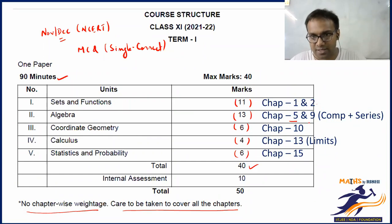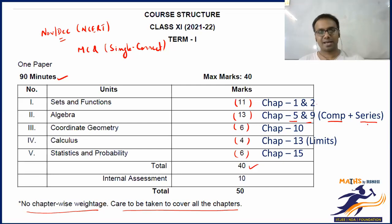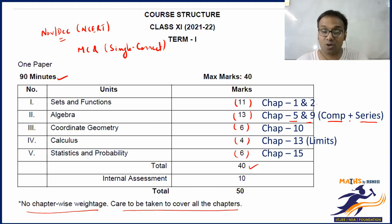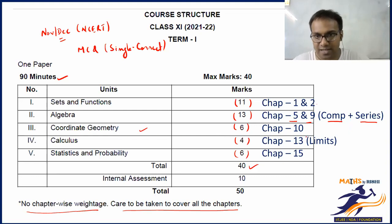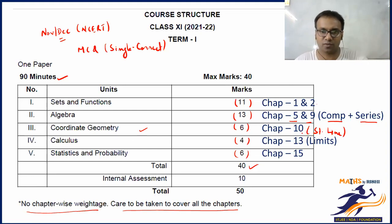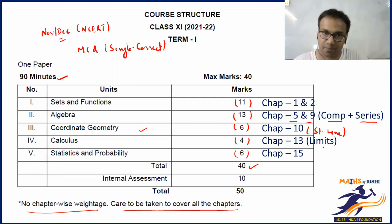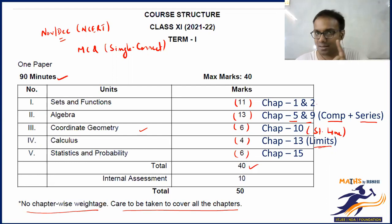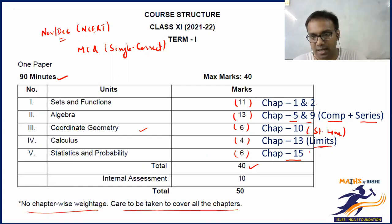For Algebra in Term 1, you have Chapter 5 - Complex Numbers and Quadratic Equations - and Chapter 9 - Sequence and Series. Linear Inequalities shift elsewhere. For the Coordinate Geometry portion, you have Straight Lines. For Calculus, Chapter 13 covers Limits and Derivatives, but in Term 1 only Limits will be asked - Derivatives will not be covered in Term 1.